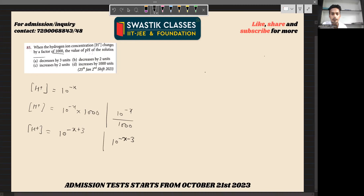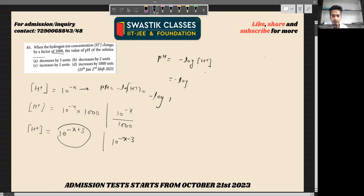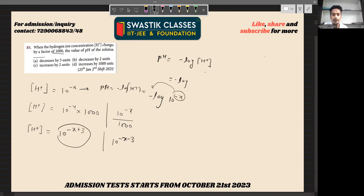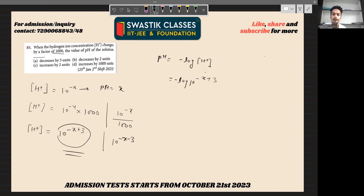Now, thinking about pH: the pH formula is minus log of H+ ionic concentration. For the original case, pH equals minus log of 10 to the power minus x, which gives pH equals x. For the new case, pH equals minus log of 10 to the power minus x plus 3, which gives x minus 3. Or for the other case, minus of minus x minus 3 equals x plus 3.